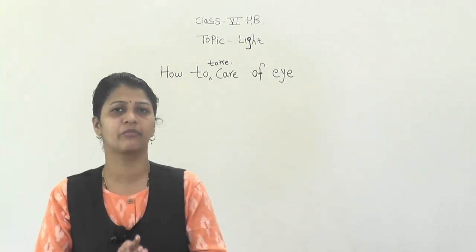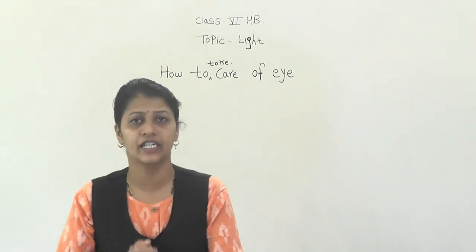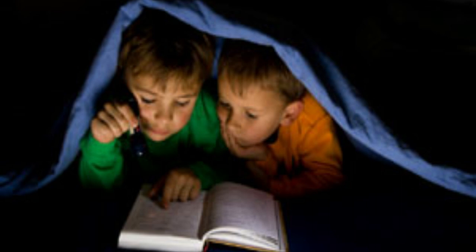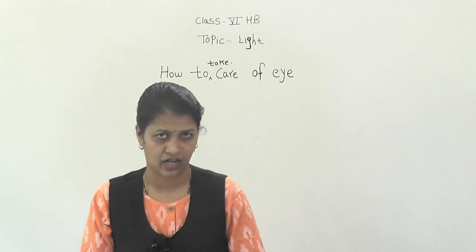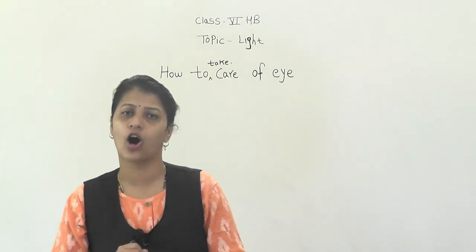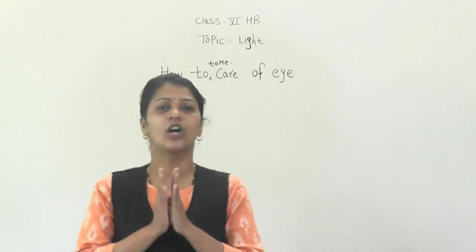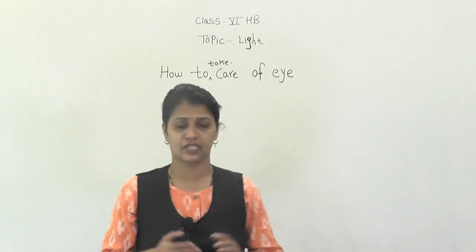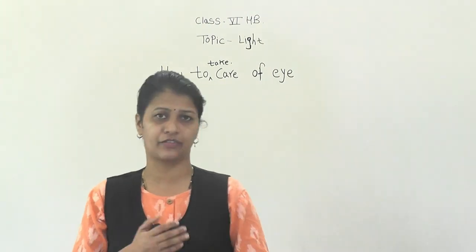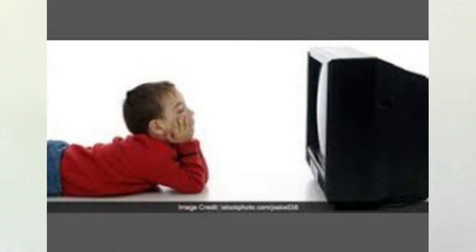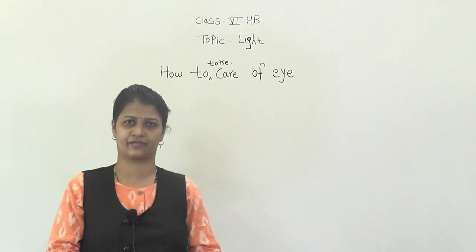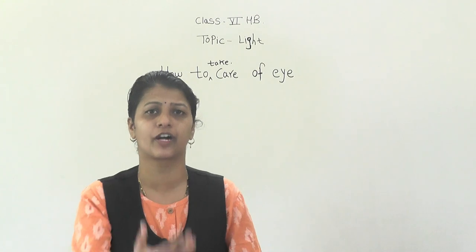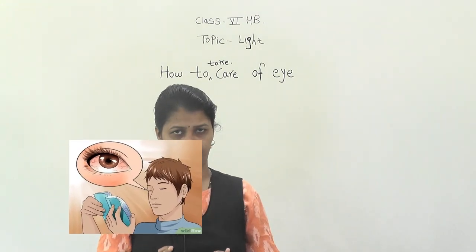Do not read in dim or very bright light. Reading in dim light causes strain on the eye and can affect your retina. You should read in good light. Also, many students watch TV for long periods or hold their mobile too close to their eyes, which causes stress on the eyes.